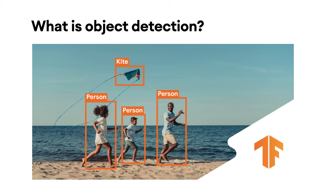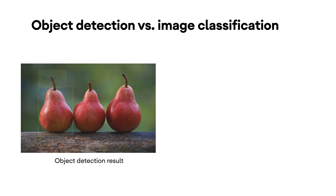So what is object detection? Let's start with the definition. Object detection is a computer vision task that analyzes an input image, then returns to you a list of known objects — what they are and where they are located in the image. The object's location is returned in the form of a bounding box, which is a rectangle that contains the object.